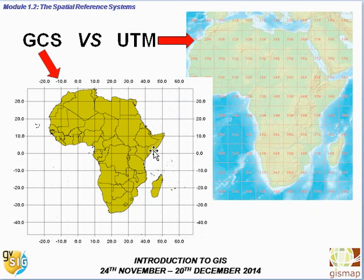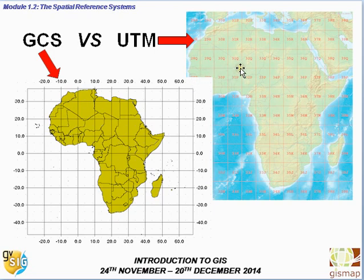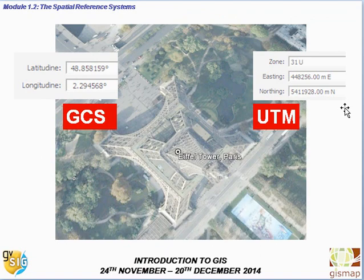For example, if you look at Africa using a geographic coordinate system, Africa ranges from 20 degrees west to 50 degrees east. While in UTM, Africa spans from zone 28 to zone 39. Importantly, the same point — like the Eiffel Tower in Paris — can have different coordinates depending on the system used, even though it stays in the same location. On the left you see its coordinates in the geographic coordinate system, and on the right in UTM.